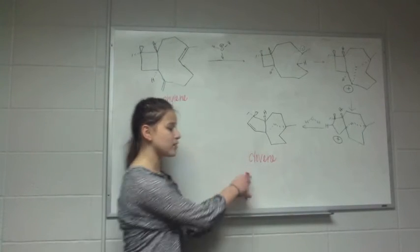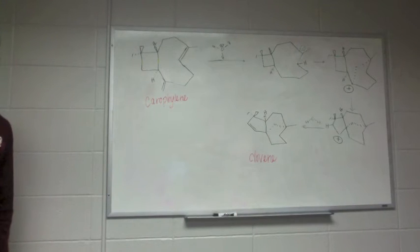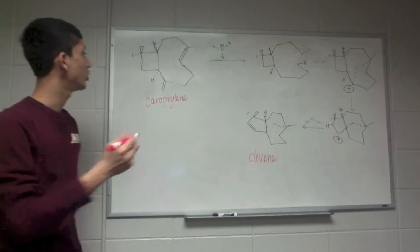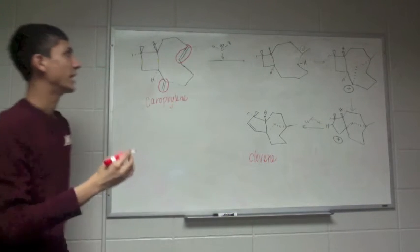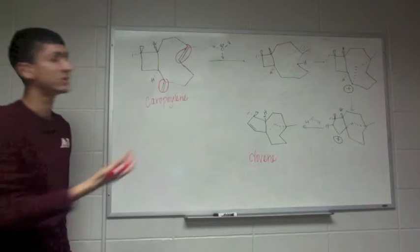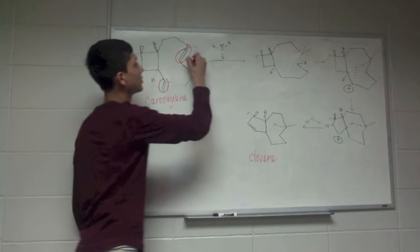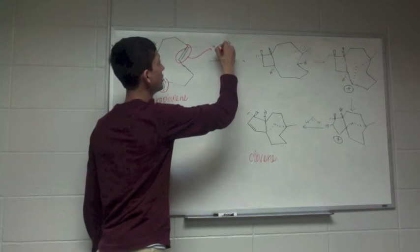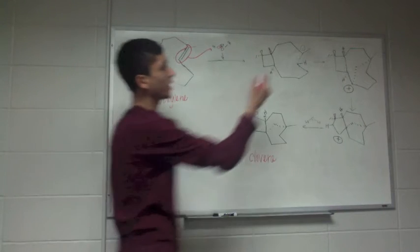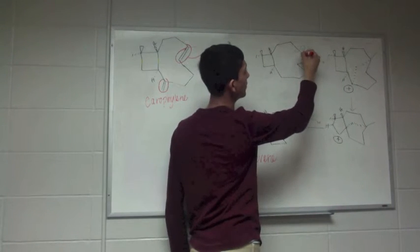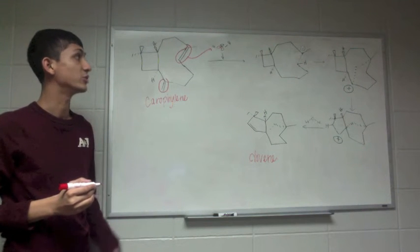Our second product is clovine. Like before, we have our two alkenes again, and this is the alkene that attacks because it forms a more stable carbocation intermediate. So it's going to attack the hydrogen — hydrogen-oxygen bond electrons move to the oxygen — and we get a carbocation right here on this carbon. It's a tertiary carbocation, which is very, very stable.